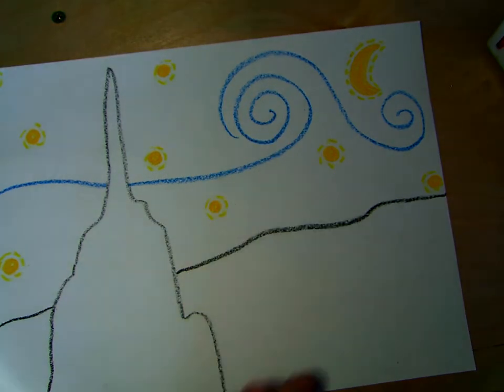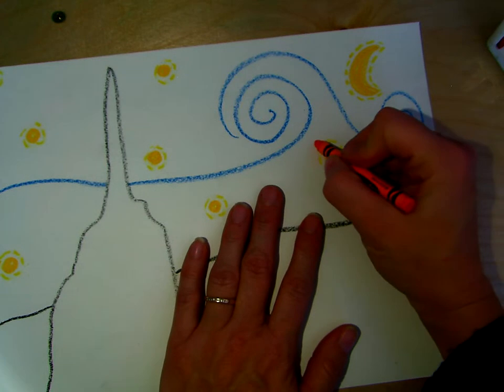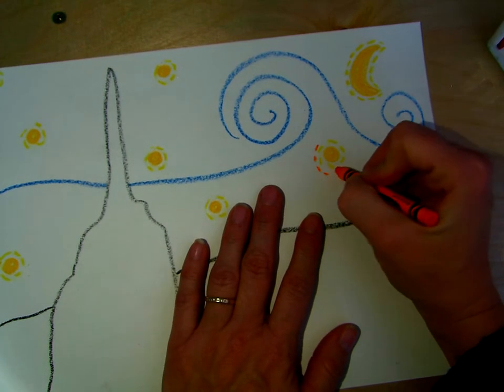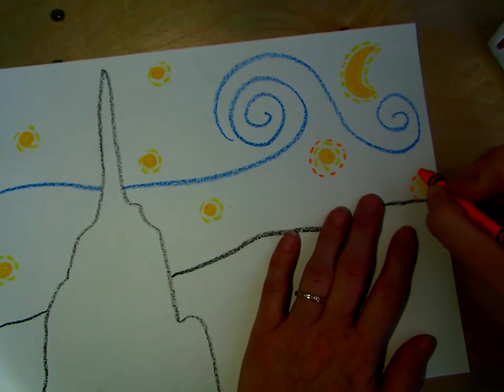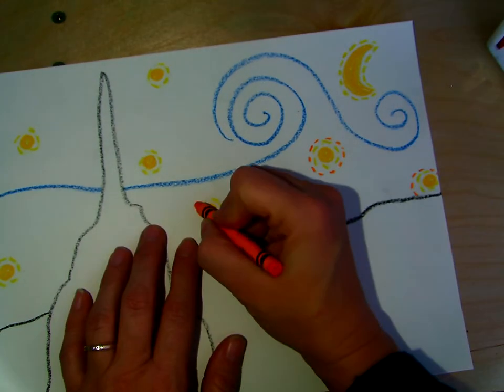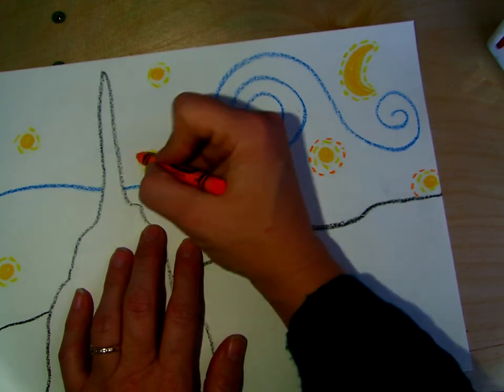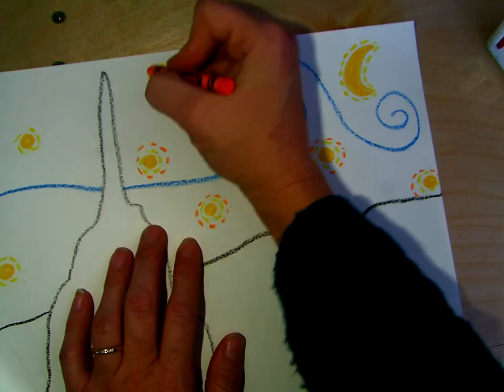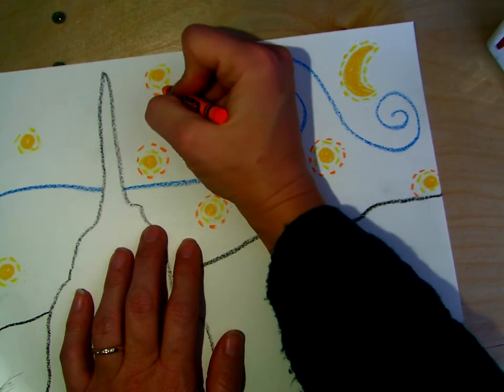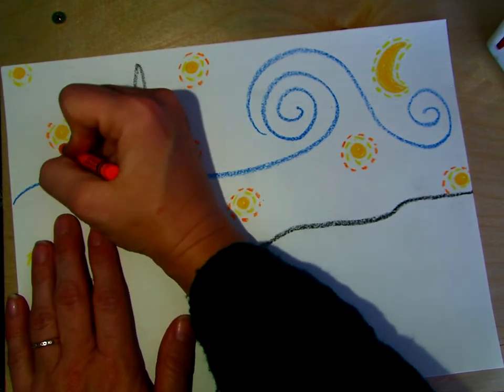Then I'm going to take my orange crayon and I'm going to go around again and make more dashes all the way around. If you need to pause the video, please do that and finish up your stars. I've done this for many years. So I go a little bit faster than maybe you would doing it for your first time.